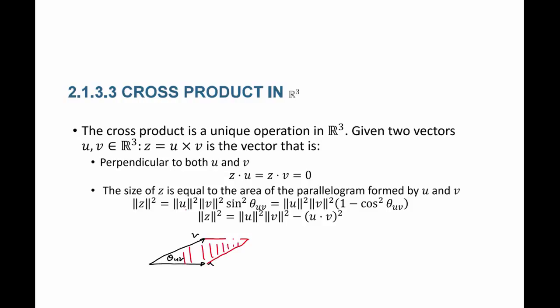The area of the parallelogram is equal to the norm of u times the norm of v times sine theta, and this area equals the norm of the vector z. So norm z squared equals norm u squared times norm v squared times sine squared theta. And if you manipulate the formulas, you get the equivalent formula: norm z squared equals norm u squared times norm v squared minus (u dot v) squared.